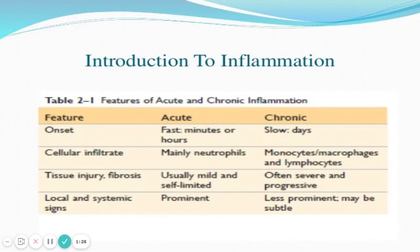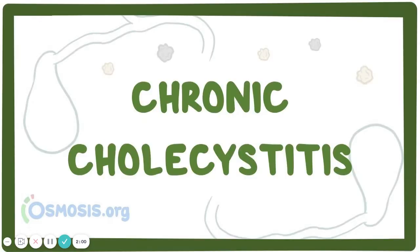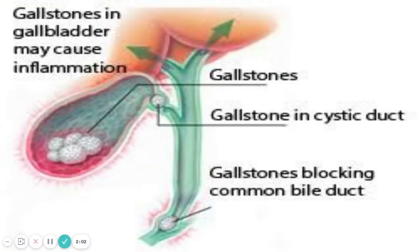What are the differences between acute and chronic inflammation? In acute inflammation, onset is fast — minutes to hours — while in chronic it is slow, in days. The main cellular infiltrate in acute inflammation is neutrophils, whereas in chronic inflammation it is macrophages and lymphocytes. Tissue injury is mild and self-limited in acute, but severe and more progressive in chronic. Local and systemic signs are more prominent in acute and less prominent in chronic inflammation.